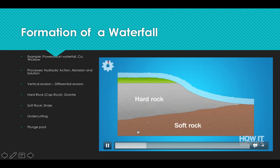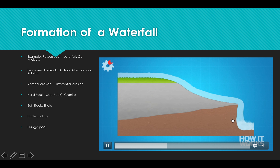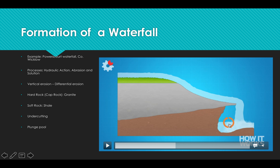Going through the explanation visually, you can see the hard rock and soft rock. Vertical erosion is eating away at the soft rock more quickly — that's your differential erosion — and it's beginning to undercut, so that a plunge pool is formed at the base. The load of the river falls and plunges over with the force of the water, so both hydraulic action and abrasion are digging down into the bed. The back wall is being dissolved through solution. There are the three methods of erosion taking place.